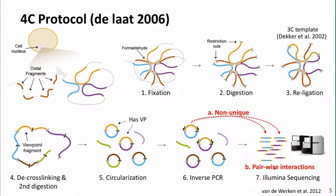There are two issues here. First, these circles create multiple reads — they are not unique due to PCR amplification. On the other hand, these are just pairwise interactions, so you cannot really tell if, for example, a gene is interacting with two enhancers simultaneously or if the interactions are just pairwise.